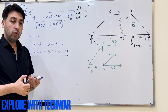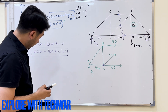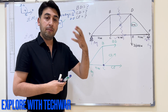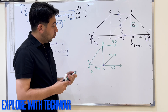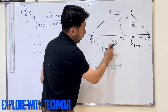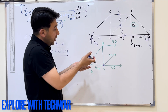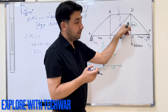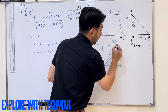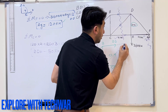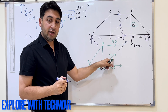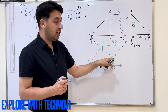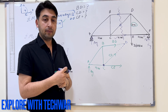Now I want to find CE. I need to take moment about a point where the other two unknowns — BD and CD — both pass through. That point is D, which is not in the cut section but comes from the original truss. I will locate point D and use it in the section. If I take moment about point D, both BD and CD pass through D so their moments are zero, leaving only CE as the unknown.